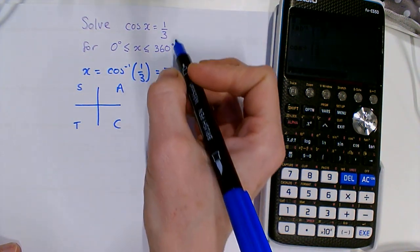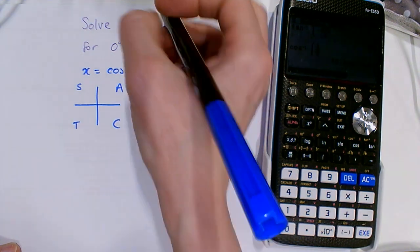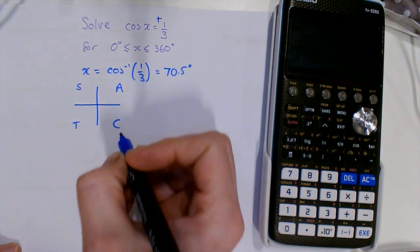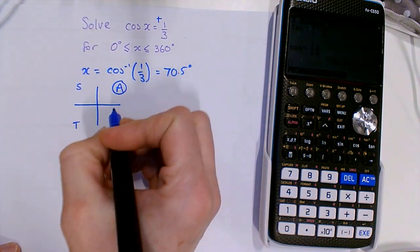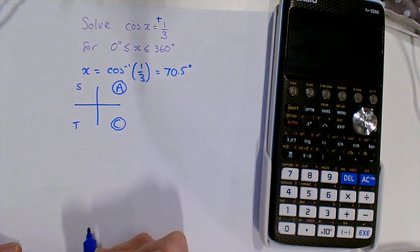So I have cos x is positive one-third. I'm going to circle the regions on the CAST diagram where cos is positive - here and here.